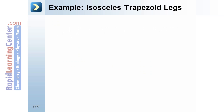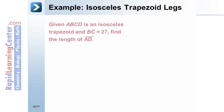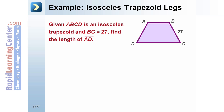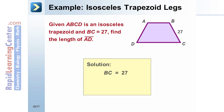Example: given that ABCD is an isosceles trapezoid and leg BC equals 27, find the length of leg AD. Solution: the given information is that leg BC has a length of 27. The legs of an isosceles trapezoid are congruent, so BC equals AD. Therefore, AD equals 27.